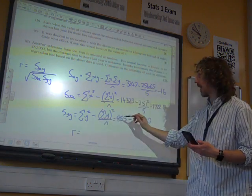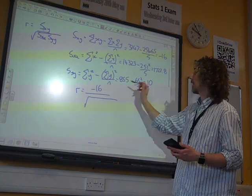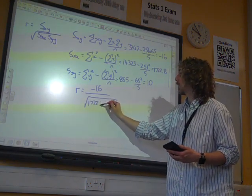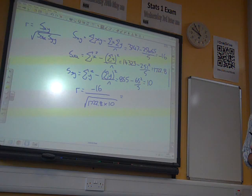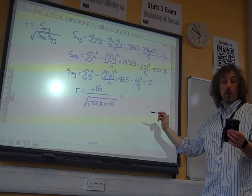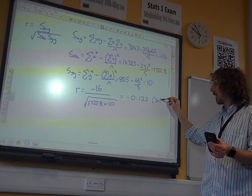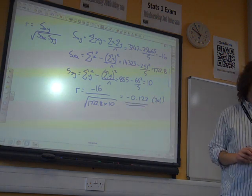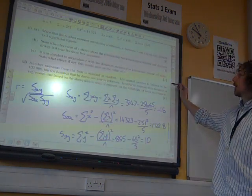So R is SXY, minus 16, divided by the square root of SXX times SYY. Which gives us a value that we're hoping is the value that they said it was going to be. Root 1722.8 times 10, minus 0.122, which is three significant figures. That's what they said, wasn't it? Minus 0.1218996759. Great.